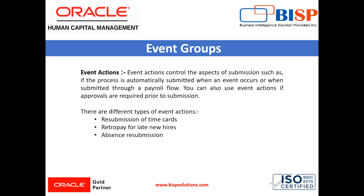Next is event action. An event action links a process to events within an event group. When an event occurs, the process is triggered based on a set of conditions defined on the event actions.